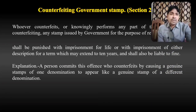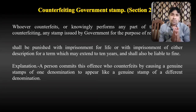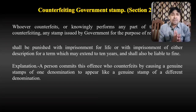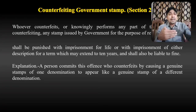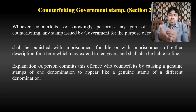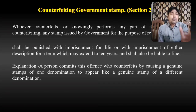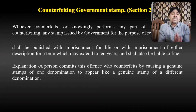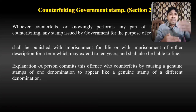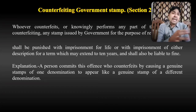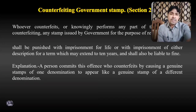Explanation: A person commits this offense who counterfeits by causing a genuine stamp of one denomination to appear like a genuine stamp of a different denomination. For example, if a 100 rupees stamp is altered by adding a zero to make it appear as a 1000 rupees stamp — such a person also commits an offense under Section 255. Not only making a fake stamp, but also making one stamp appear like another stamp of different denomination falls under Section 255.